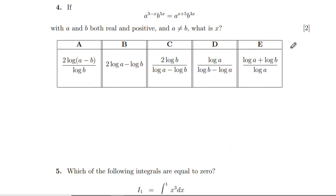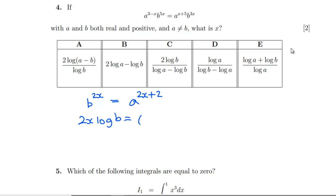Question 4: a and b are both real and positive, a ≠ b — find x. Dividing through by b^(3x), we get b^(2x) on the left. Subtracting powers gives exponents of (x − (−x)) = 2x and (5 − 3) = 2 on the right. Taking logs of everything: 2x log b = 2x log a + 2 log a, allowing us to rearrange for x.